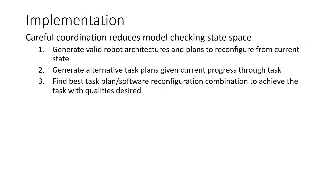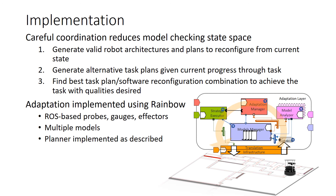To bring this all together, when the robot is trying to accomplish a task, environment changes, software crashes, or sensor failures could prevent task completion. We use a co-adaptation approach that coordinates Alloy, PRISM, and path planning to derive reconfigurations, considering dependencies between software configurations and task plans. It reduces the planning state space but still constructs optimal plans. We have implemented this approach using the Rainbow self-adaptation framework, customizing probes, gauges, and effectors for ROS systems, incorporating multiple models, and implementing our approach as its planning component. Rainbow runs in parallel to the robot software, discovering problems and finding and enacting reconfigurations as the robot executes its mission.